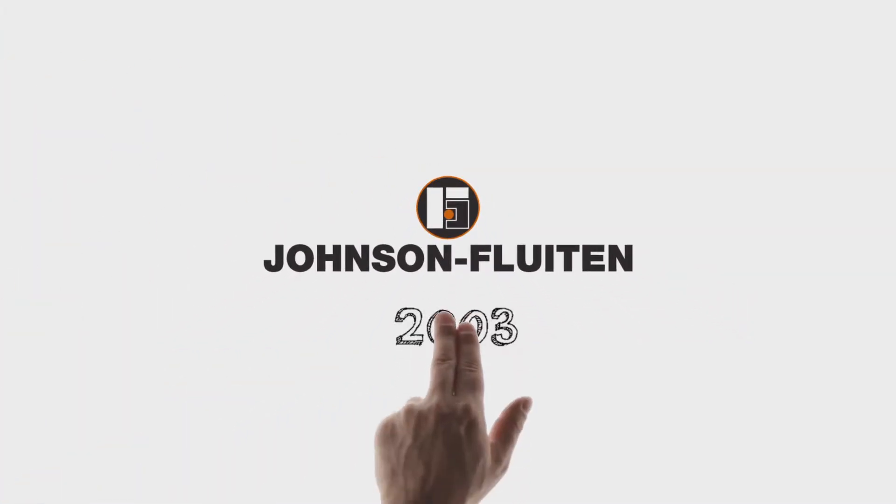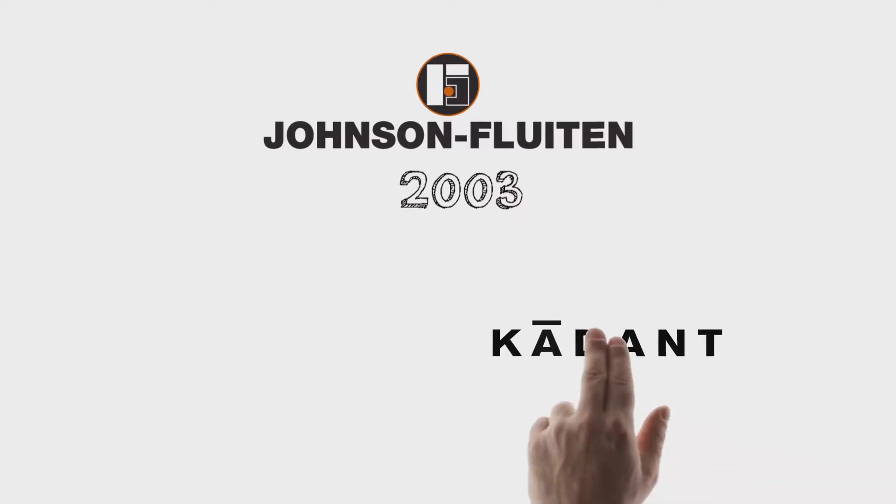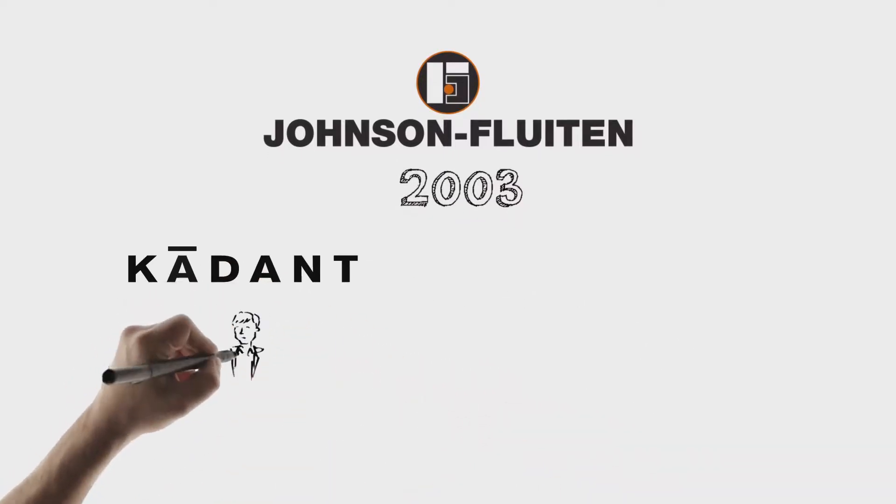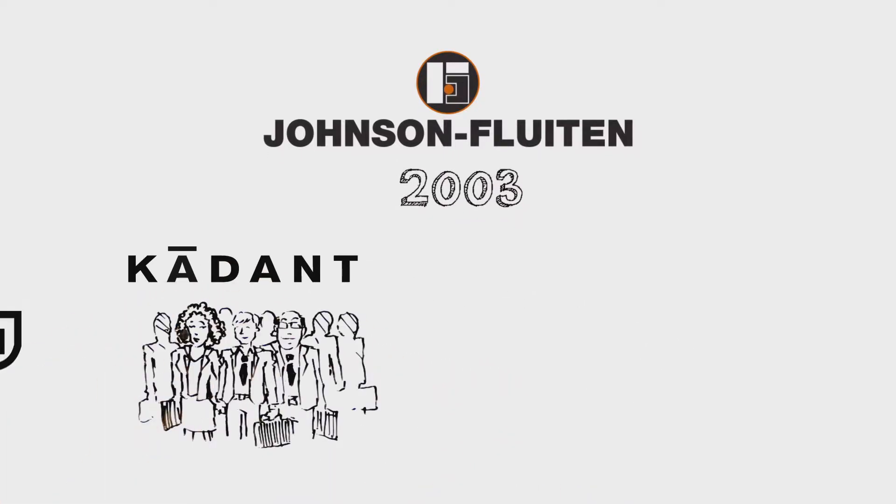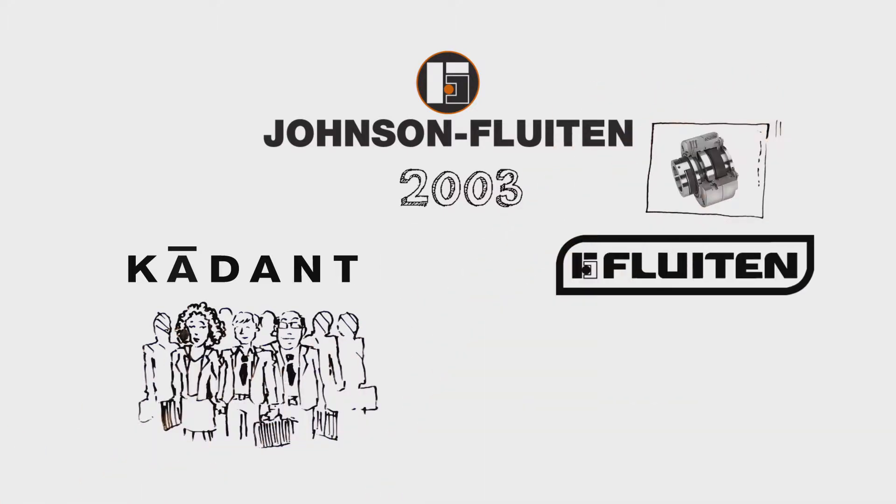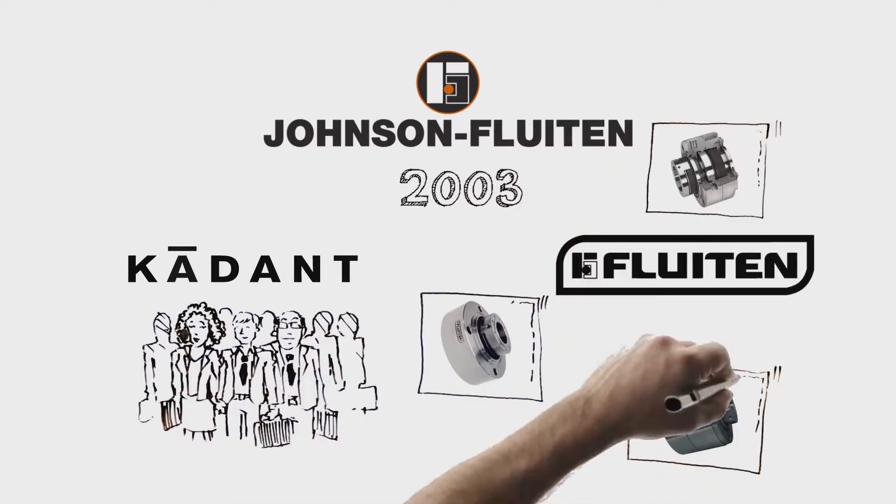Johnson Fluitton was founded in 2003 as a joint venture between Cadent Johnson with its global sales and service network and Fluitton, designer and producer of mechanical seals and rotary unions.